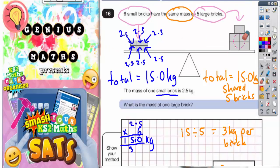So if we replace each one of these bricks with a 3, then you've got 3, 6, 9, 12, 15. So that does make the total 15 kilograms.